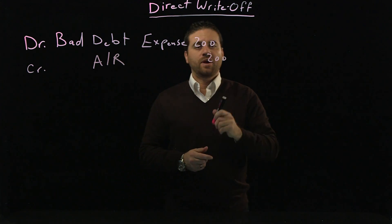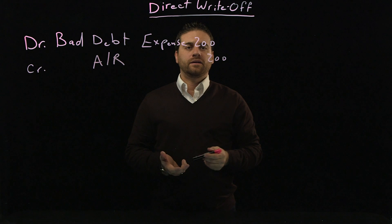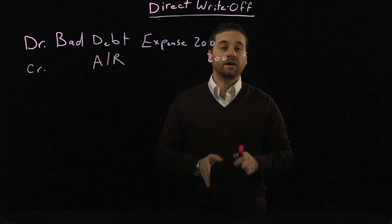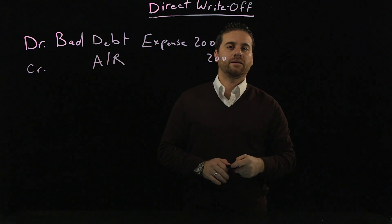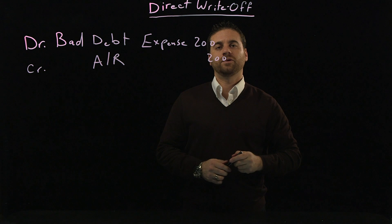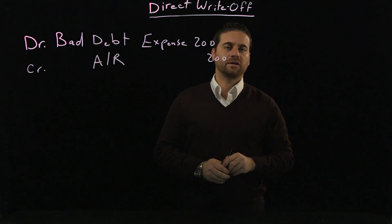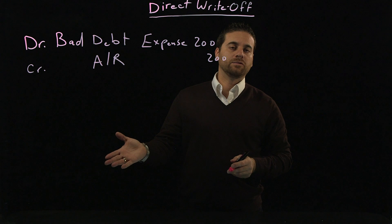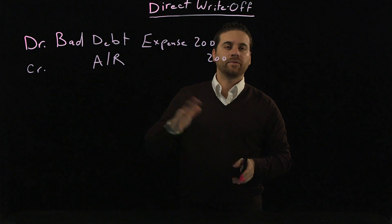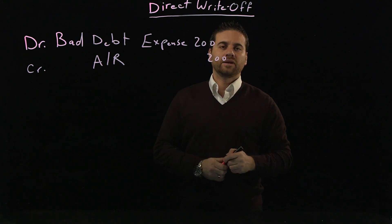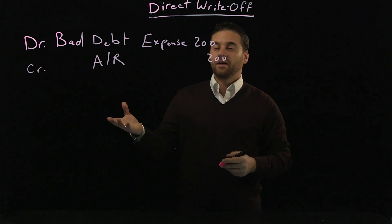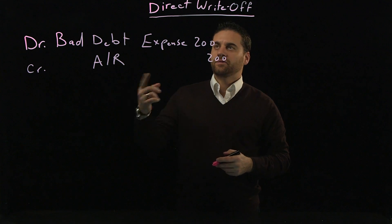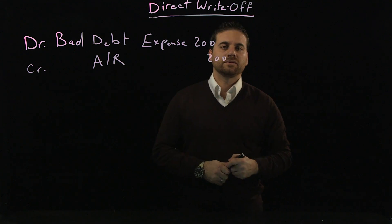With the direct method, we only record this once we're 100% sure, or almost sure, that the money is not going to be collected. We wait until we give up waiting for that money, and then we record it. It's called direct because we directly take it from accounts receivable.